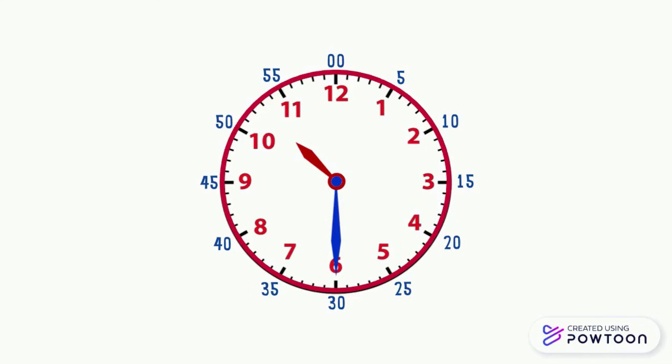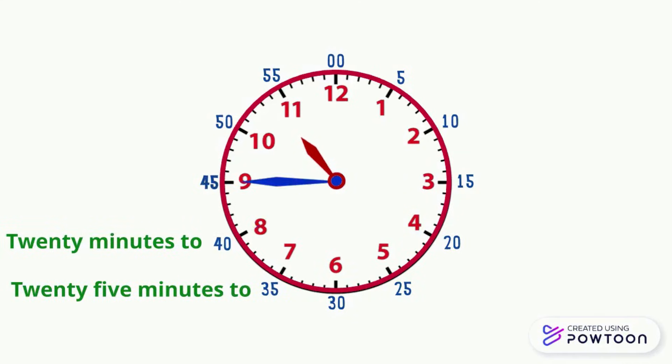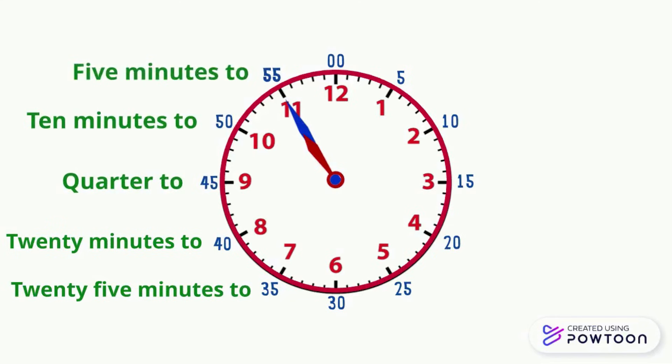On this clock face, I have placed the important minutes to remember them. If the large hand is pointing on the number 7, then it's 25 minutes to. If it's pointing on the number 8, it's 20 minutes to. On the number 9, it's quarter to. On the number 10, it's 10 minutes to. And on the number 11, it's 5 minutes to. And of course, remember to say quarter past when the large hand is pointing on the number 3, and half past when the large hand is pointing on the number 6.